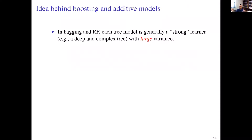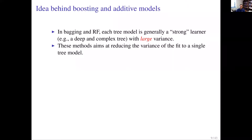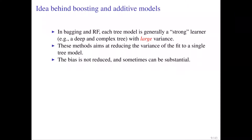Both bagging and random forest operate on variance reduction — they utilize model averaging of strong learners. Each CART tree can be pretty complex and flexible in characterizing the underlying mean function. The issue with CART is large variance, and these ensemble methods try to reduce that variability. Neither bagging nor random forest addresses the bias component of CART; they operate purely on the variance portion.